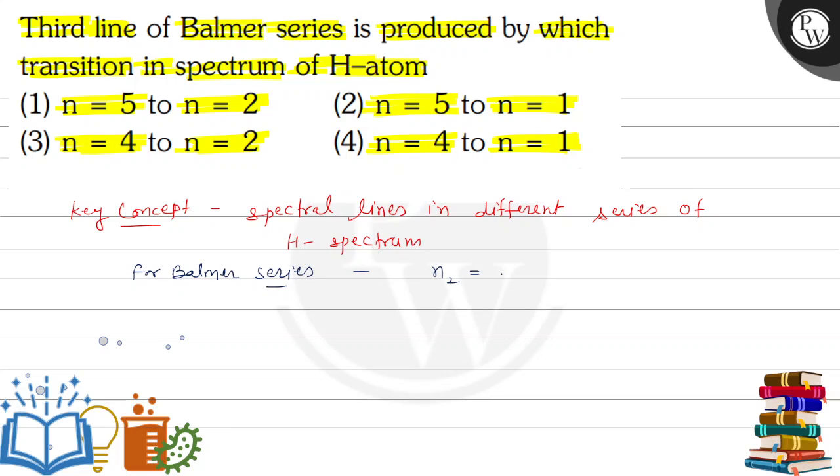This is for Balmer series. Third line of Balmer. First line transition, this is 3 to 2.